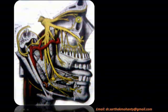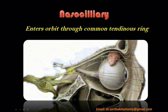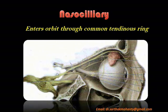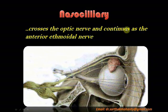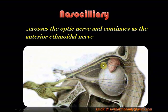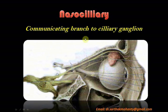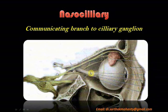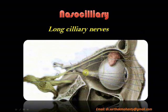The nasociliary nerve, the third branch, enters the orbit through the common tendinous ring — unlike the other two branches which enter outside it. It crosses the optic nerve above and continues as the anterior ethmoidal nerve, passing through the anterior ethmoidal foramen. Its branches include a communicating branch to the ciliary ganglion and the long ciliary nerve, which runs below the optic nerve.